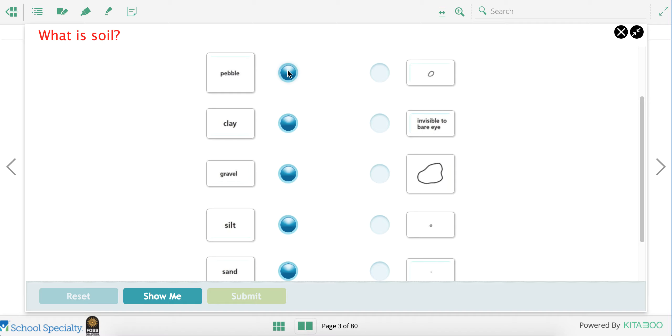Hmm. Let's see. I remember that the pebble is the biggest size. The clay is invisible to the bare eye. Hmm. I think gravel is a little bit smaller. Sand is pretty small. And the silt is tiny.